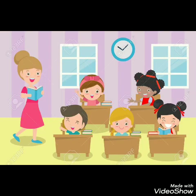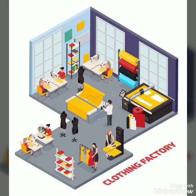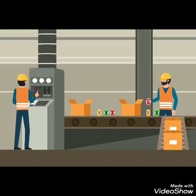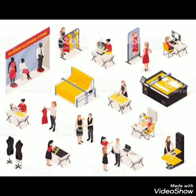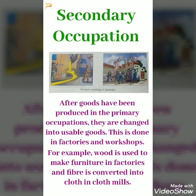Now we are going to see our today's topic: secondary occupation. Secondary occupations are those activities which involve the manufacturing of finished goods by processing the raw materials that are found in nature. After goods have been produced in the primary occupations, they are changed into usable goods.